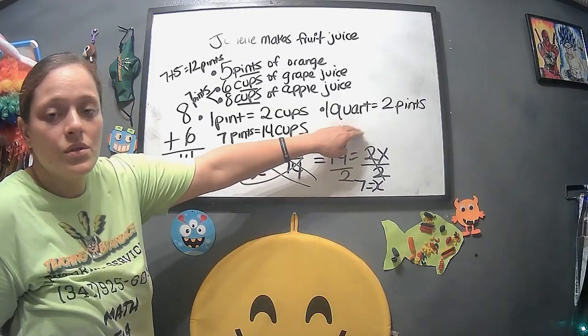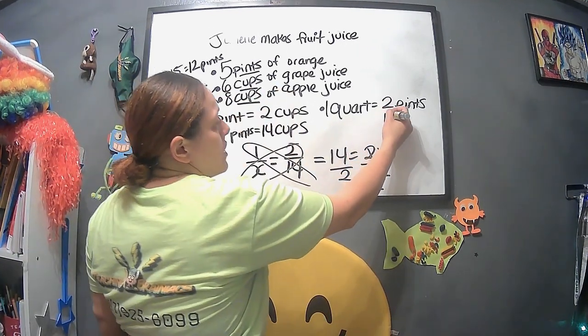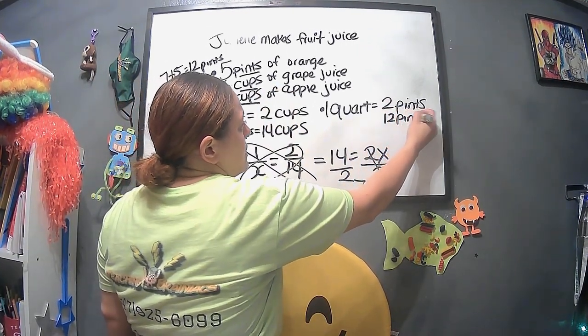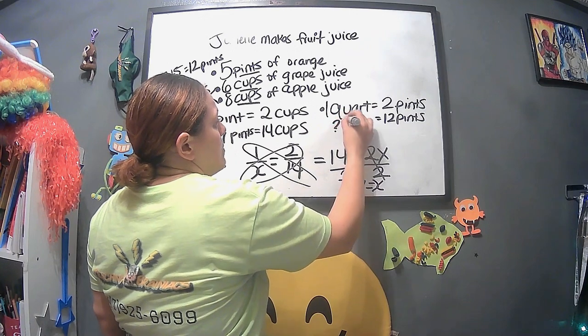Now we have 7 pints up here, right? We could do 7 plus 5 pints equals what? Well, 7, 8, 9, 10, 11, 12. We have 12. And we're going to make sure we label it pints. Now we're going to use this one. So we're going to put 12 pints equals how many quarts?